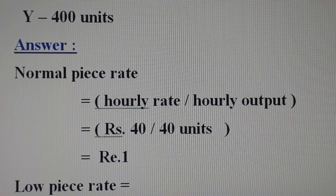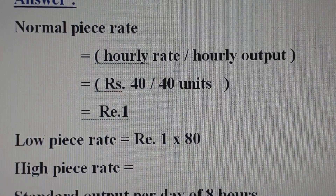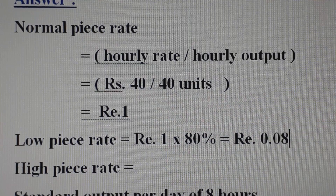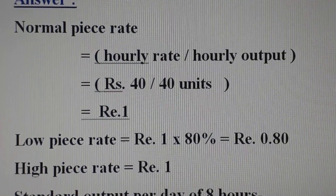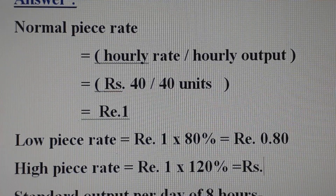The low piece rate is 80% of Re. 1, which equals Rs. 0.80 per unit. The high piece rate is 120% of Re. 1, which equals Rs. 1.20 per unit. So Rs. 0.80 is the lower efficiency rate and Rs. 1.20 is the higher efficiency rate.